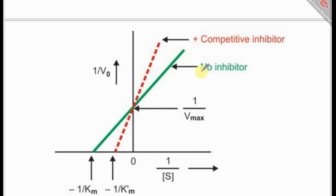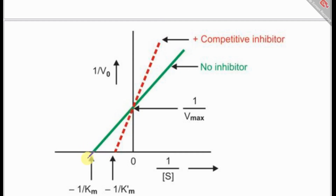This is a Lineweaver-Burk plot — the reciprocal of the Michaelis-Menten equation. The green line represents the reaction before inhibition, showing the original KM and Vmax. After addition of a competitive inhibitor, the KM shifts to the right — indicating it has increased — while the Vmax remains unaffected.